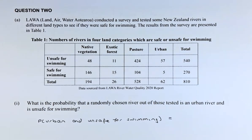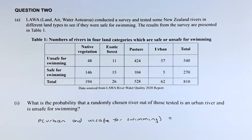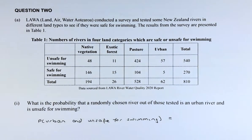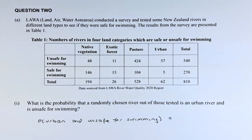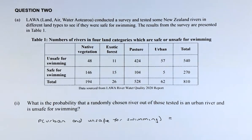Lawa conducted a survey and tested some New Zealand rivers in different land types to see if they were safe for swimming. The results were from the survey presented in Table 1. This is a probability-from-table question and we need to analyse this table. On the rows we have unsafe for swimming and safe for swimming, and in the columns we have the different land categories: native vegetation, exotic forest, pasture, and urban.